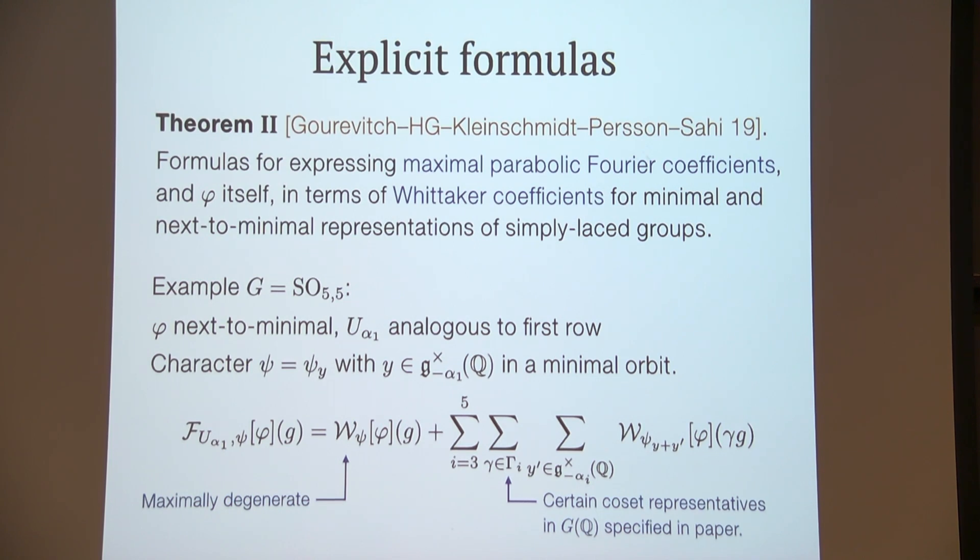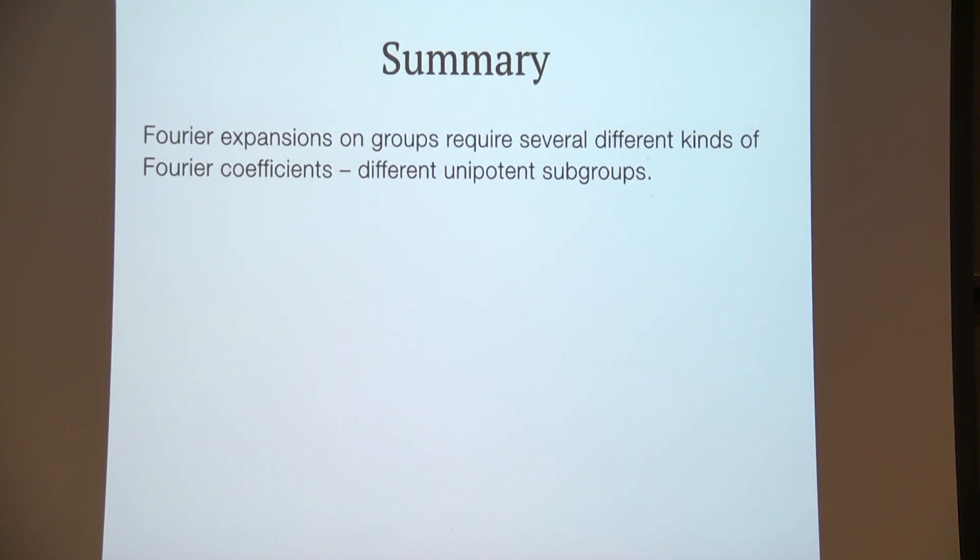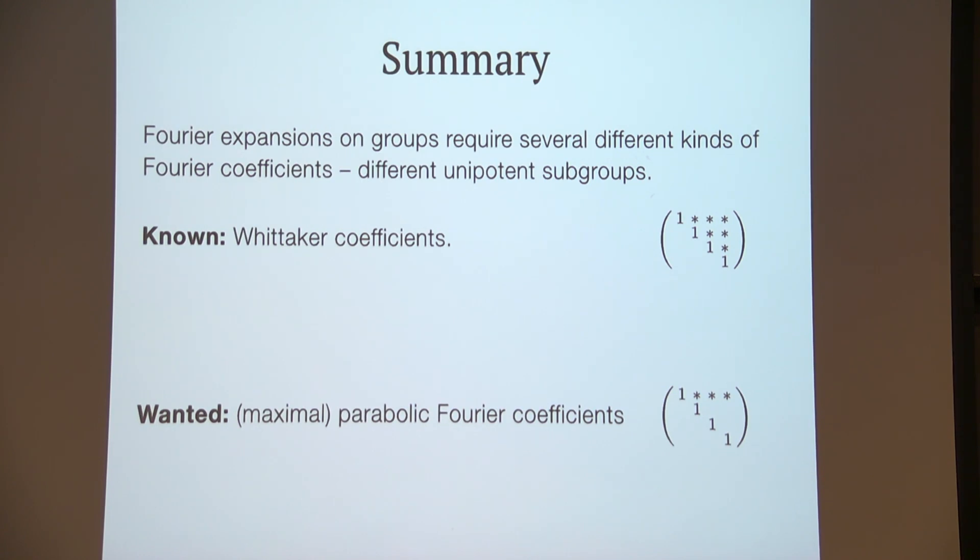So let's summarize. We talked about Fourier expansions, different kinds of Fourier coefficients corresponding to different unipotent subgroups. We have these known Whittaker coefficients out of the box. We want to compute the maximal parabolic Fourier coefficients, which tells us about black holes, for example. Theorem I tells us that it is possible to write these ones in terms of those. And Theorem II tells us exactly the formulas how to do it.